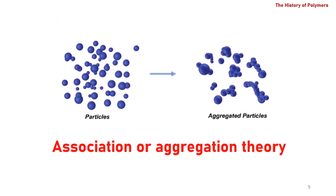Although there were significant advances in polymer and plastic synthesis, the molecular nature of polymers wasn't understood. It was believed that polymers are formed according to association theory, due to association or aggregation of molecules into polymers.